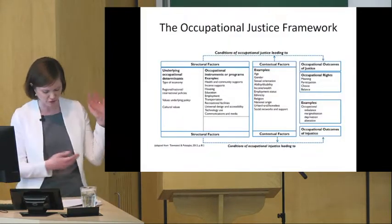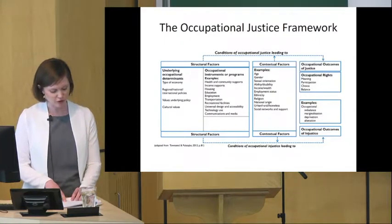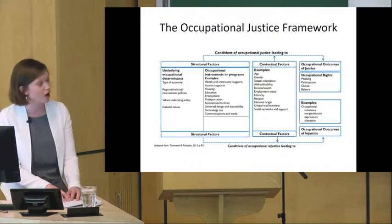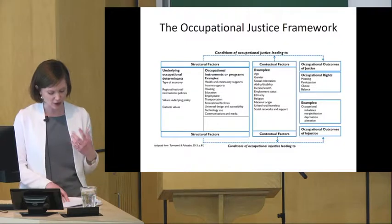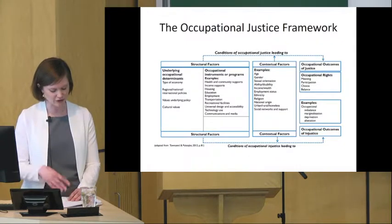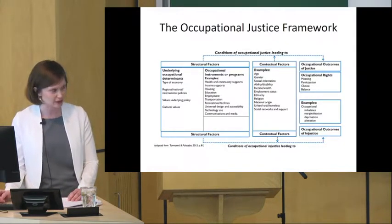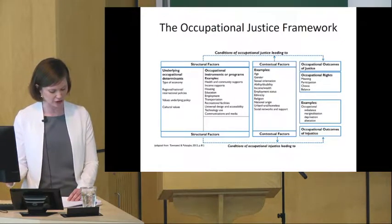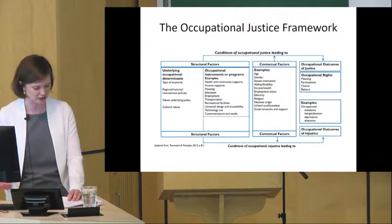Here we have the visual representation of the occupational justice framework. The strength of this framework is its ability to identify and describe a policy issue. Looking to the far right, we have occupational outcomes which are divided into rights and injustices. Occupational justice theory holds that individuals have the right to meaning, participation, choice and balance. However, if these rights are denied, it leads to one or a combination of injustices called imbalance, marginalization, deprivation and alienation.